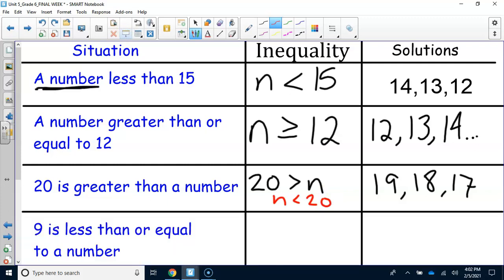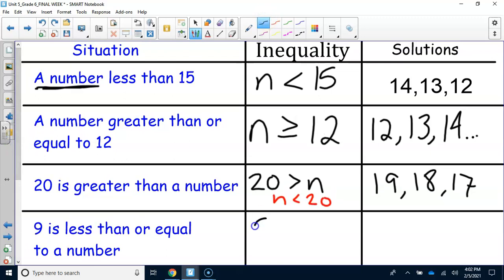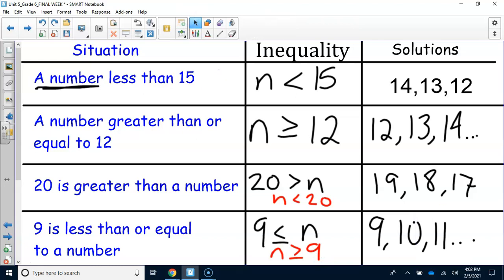Last but not least, 9 is less than or equal to a number. So 9 would work here, and then 9 is also less than 10, less than 11, so on and so forth. Again, if you rearrange this, the inequality is going to be pointing to the 9 here. So if we rearrange it, it would be n is greater than or equal to 9. That is what your chart should look like.